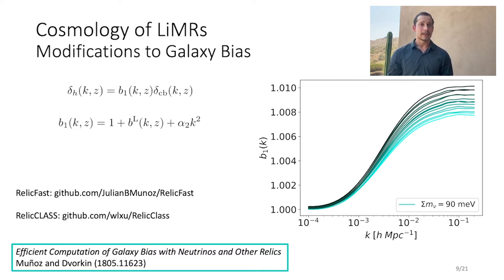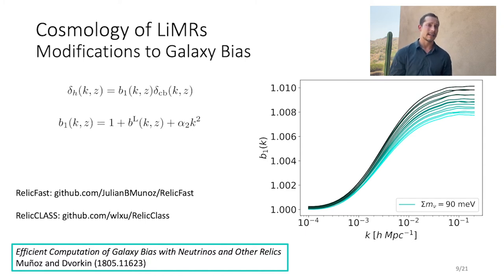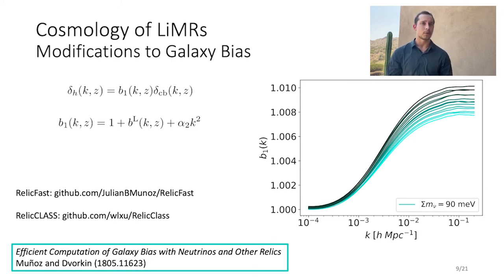Previous to this work, constraints made on LEMURs including neutrinos typically assumed that the Eulerian bias B1 had no scale dependence. However, the inclusion of light relics modifies the spherical collapse process and has been found to introduce a scale dependence into the bias, termed the growth-induced scale-dependent bias. To find the effect of this on neutrino constraints, the nonlinear, nonlocal, and temporal spherical collapse process is modeled using the previously developed RelicFAST code as a submodule of CLASS, as discussed in detail in work by Munoz and Dvorkin.